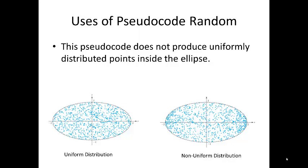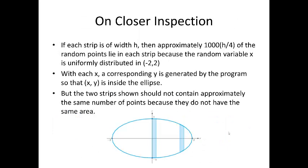Basically, the second set of pseudocode does not produce uniformly distributed points inside the ellipse as shown on the right hand side. The figure on the right is non-uniform and basically produced by the modified routine. You can see the difference, particularly on the outer edges here. But it is a bit subtle, particularly as we're doing this as a video lecture. So let's look a little bit more in depth.